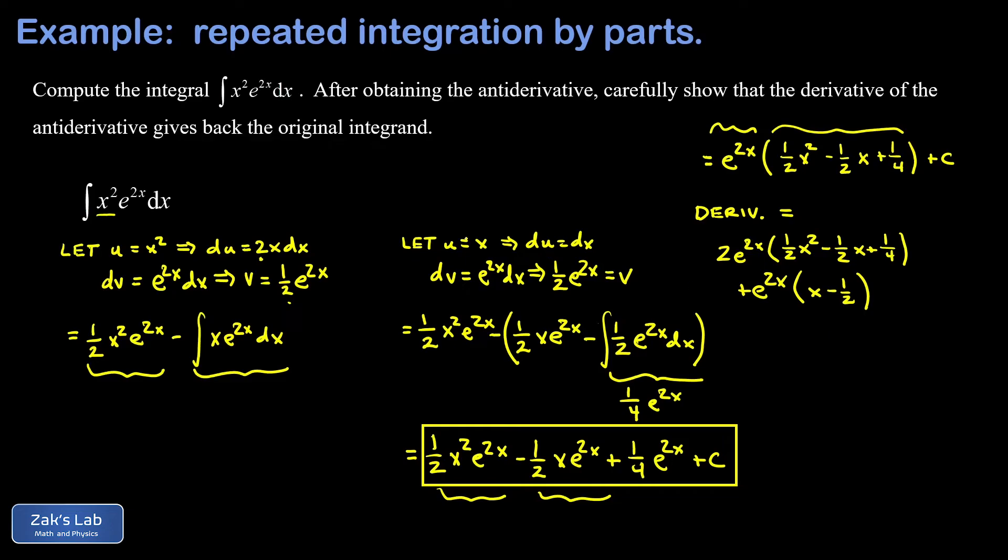Our challenge here is to show that's equal to the original integrand. I can pull the e to the 2x out of the whole thing. For this first term, I had 2e to the 2x times this polynomial. I can distribute the 2 into it at the same time I'm writing down the next step. This gives me x squared minus x. And then in my second term...